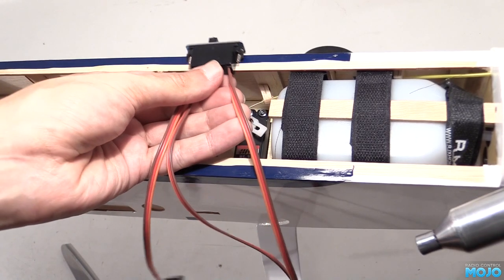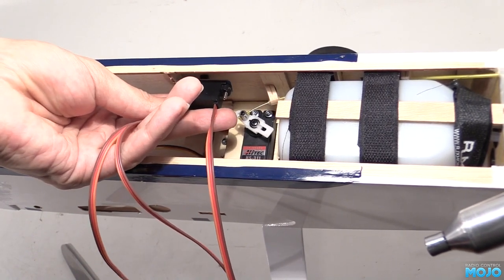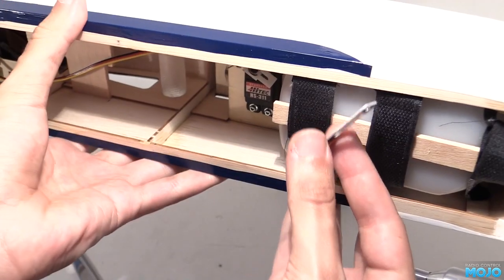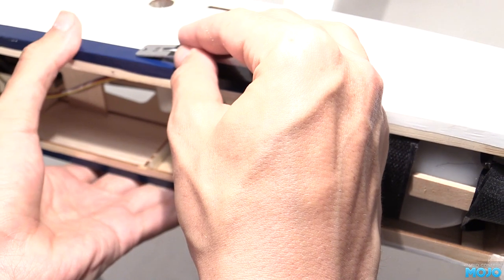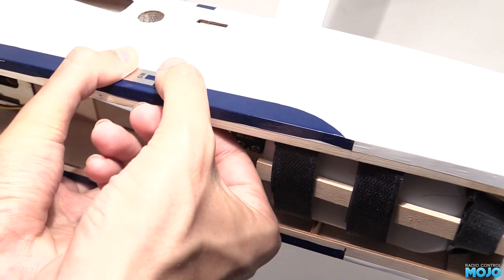We need to fit the switch. I find the easiest way is to remove the face plate and tack it in position with a little bit of thick cyano. We know it fits the switch so it's an ideal template. It wants to fit on the opposite side to the exhaust so we don't fill it up with oil. We'll leave that to dry and get on with the receiver.